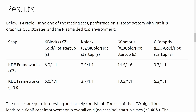For GCompris, we see improvements from 14.5 seconds on an XZ framework down to 10.5 seconds. And about a third is shaved off — from 9.7 seconds down to 6.3 seconds — when using an LZO snap with an LZO KDE framework, as opposed to an LZO snap with an XZ framework. In my opinion it's still slow, but they're making improvements, which is impressive in itself.